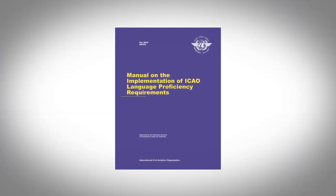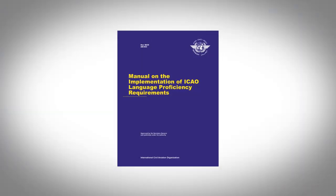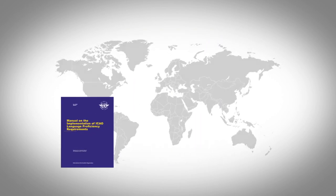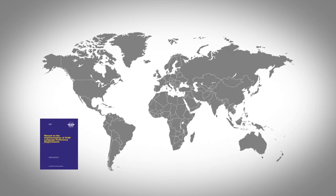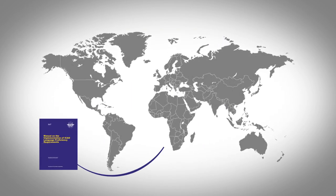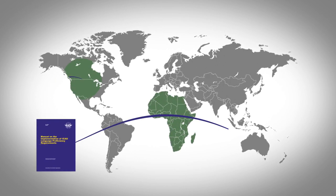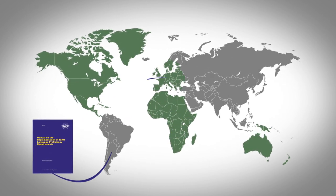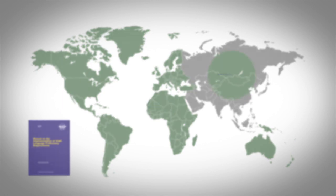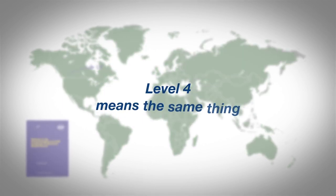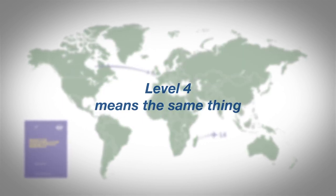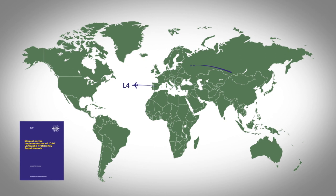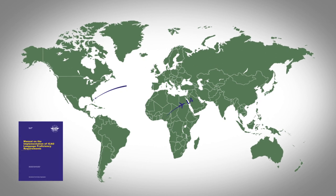In 2004, to support stakeholders, ICAO published document 9835. One important objective of this document is to provide guidelines for aviation language testing, so that Level 4 means the same thing wherever a test is taken, or whichever test is administered.